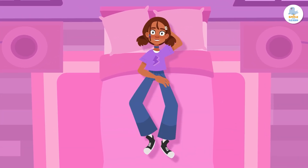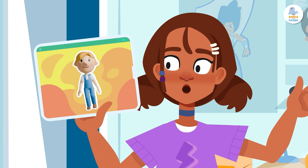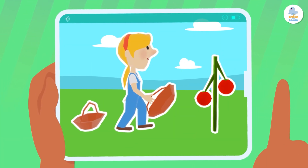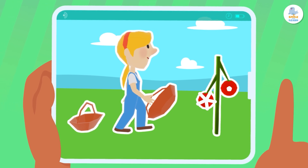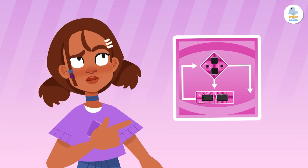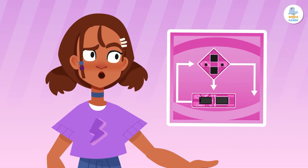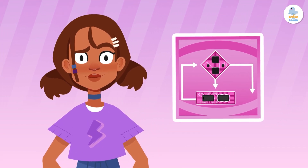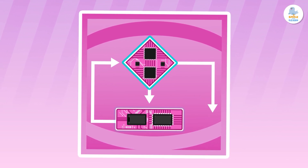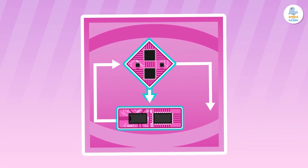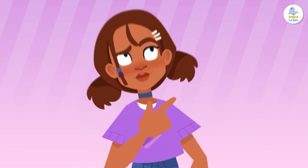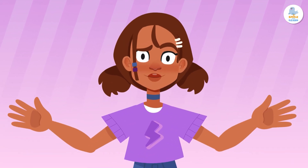It's the same for the tomatoes that Peppa has to pick — she has to keep picking tomatoes while there are tomatoes left on the plant. So what is a while loop? A while loop is a programming structure that allows us to repeat a set of instructions while a condition is true. But what is a condition?